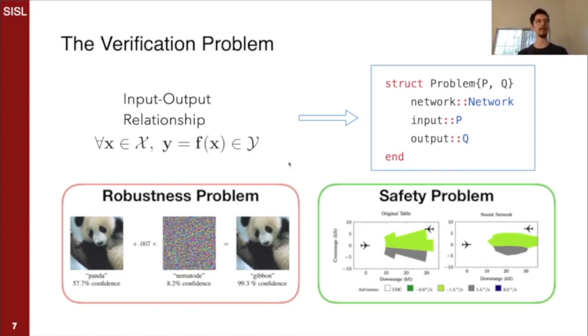We can imagine this in the context of image classification by saying for some radius in image space around a particular image, we would like the label not to change. We've all seen this sort of example where some small perturbation will vastly throw off a classification network. And we'd like to be able to show formally that for a particular network, perhaps even a particular image or set of images, that is impossible.